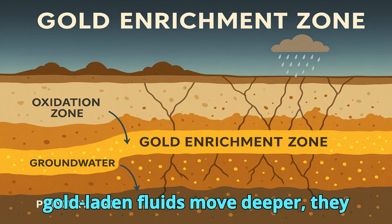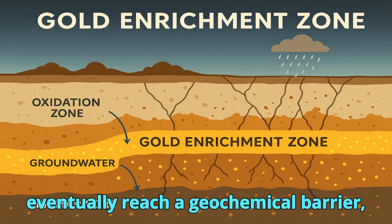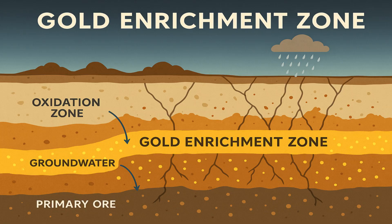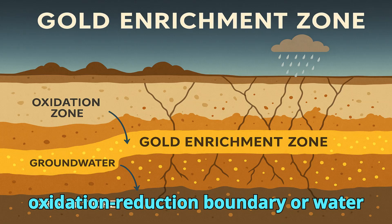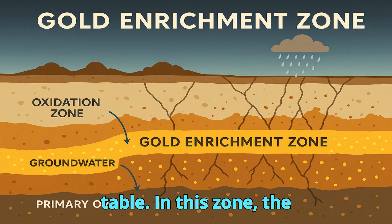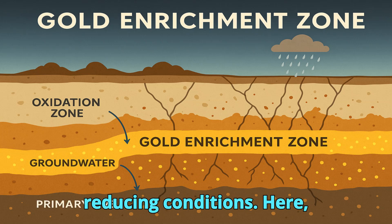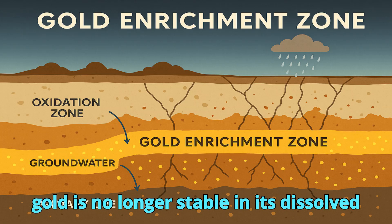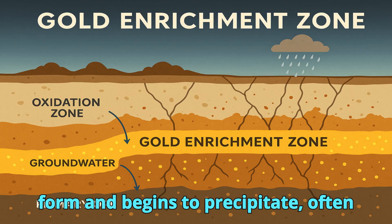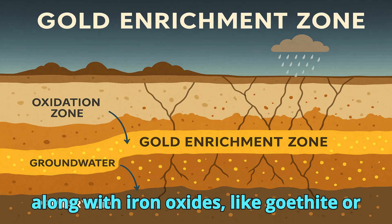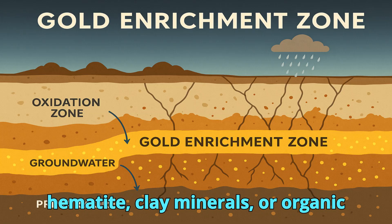As the gold-laden fluids move deeper, they eventually reach a geochemical barrier, usually located just below the oxidation-reduction boundary or water table. In this zone, the environment transitions from oxidative to reducing conditions. Here, gold is no longer stable in its dissolved form and begins to precipitate, often along with iron oxides like goethite or hematite, clay minerals, or organic matter.